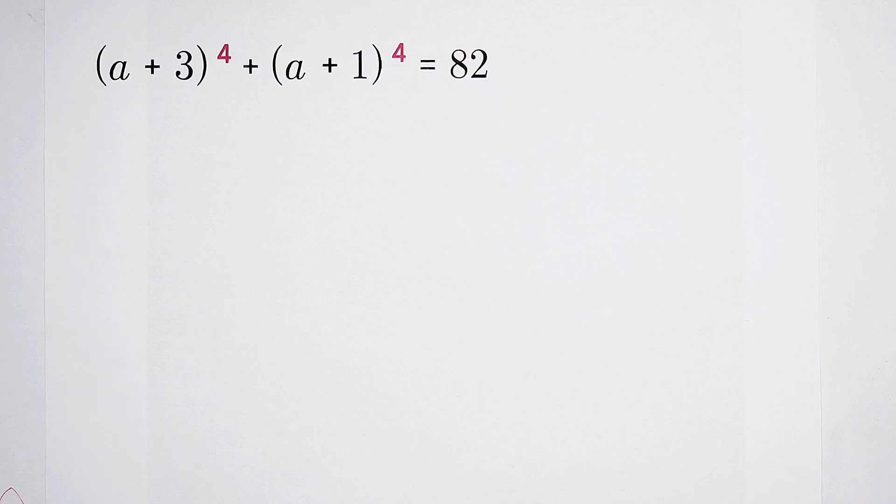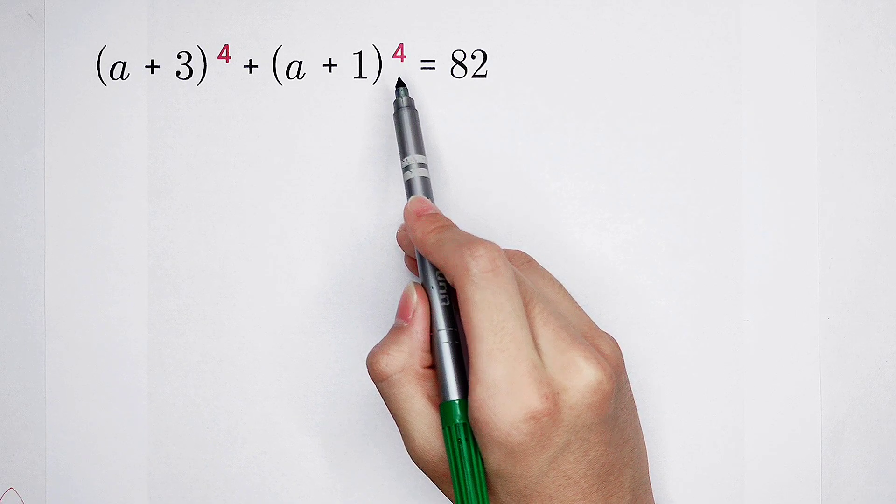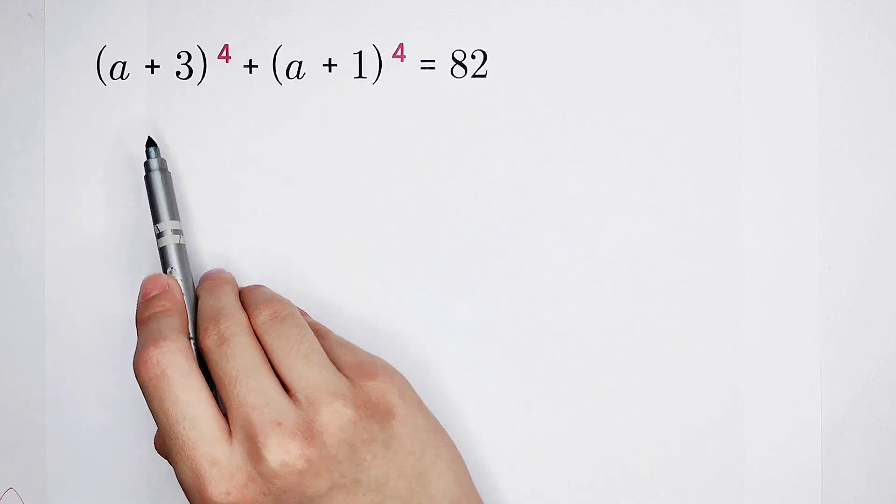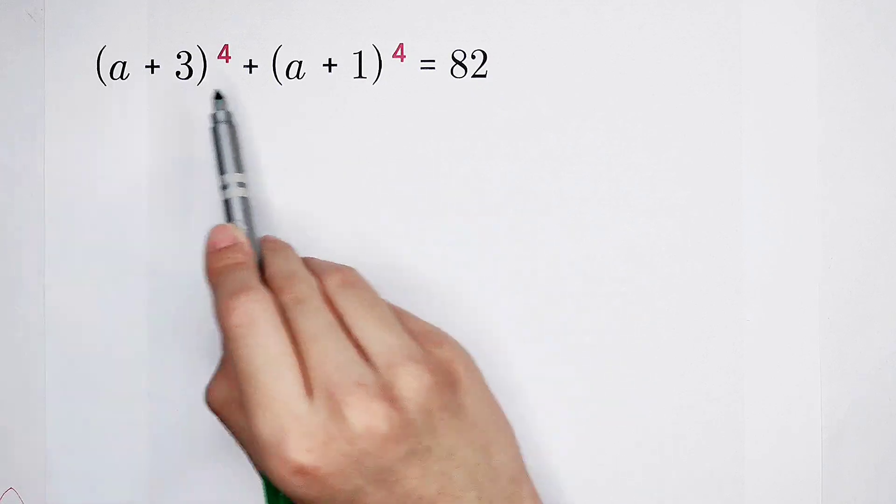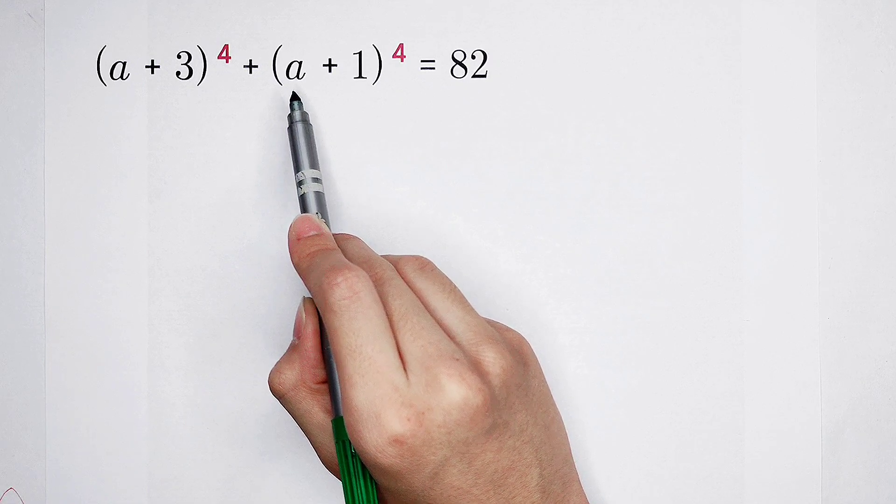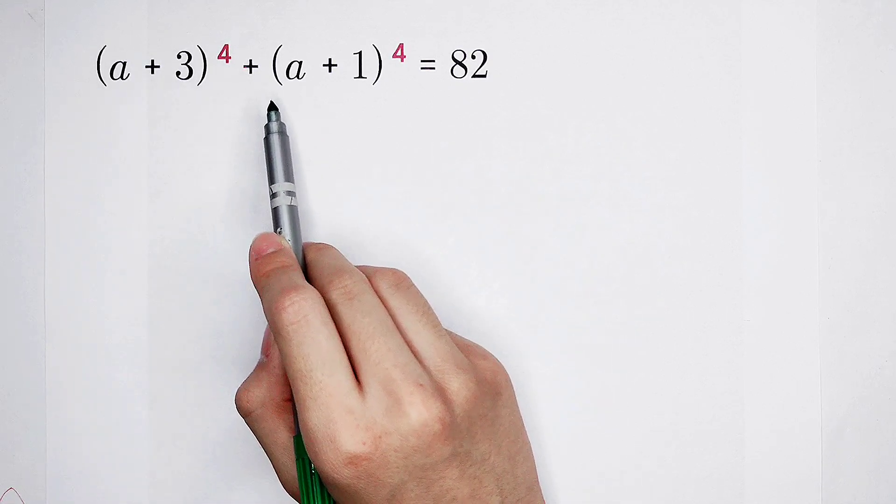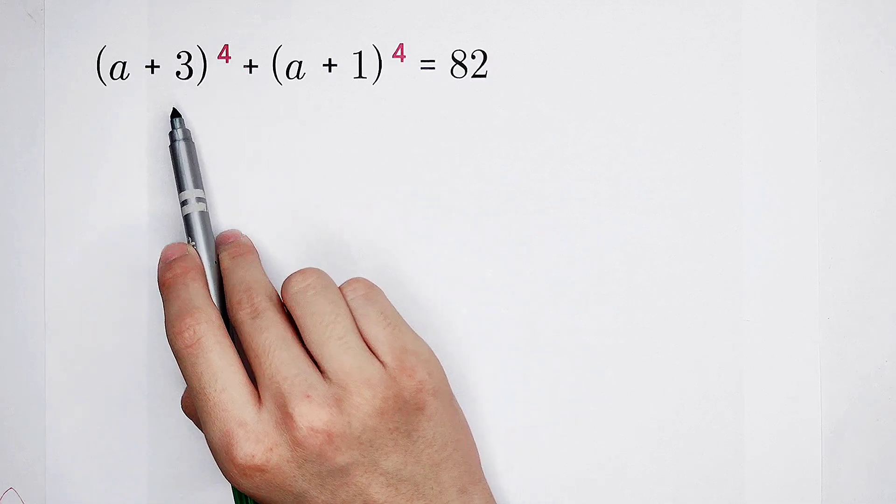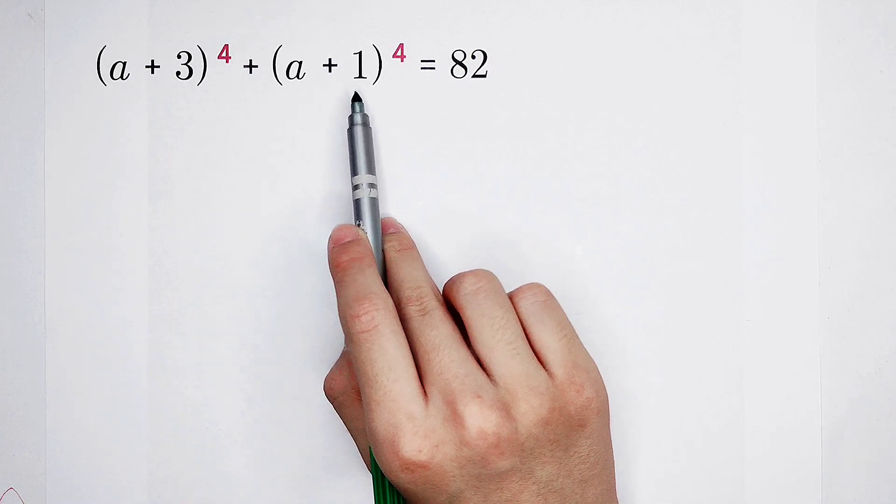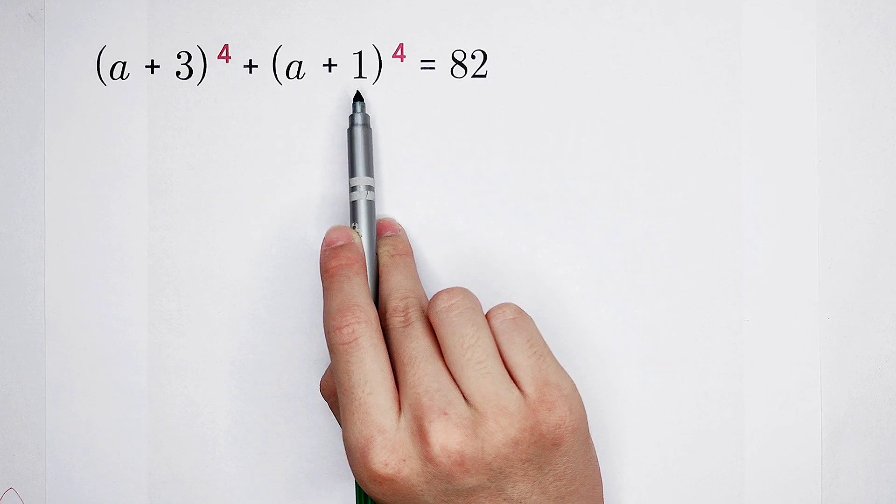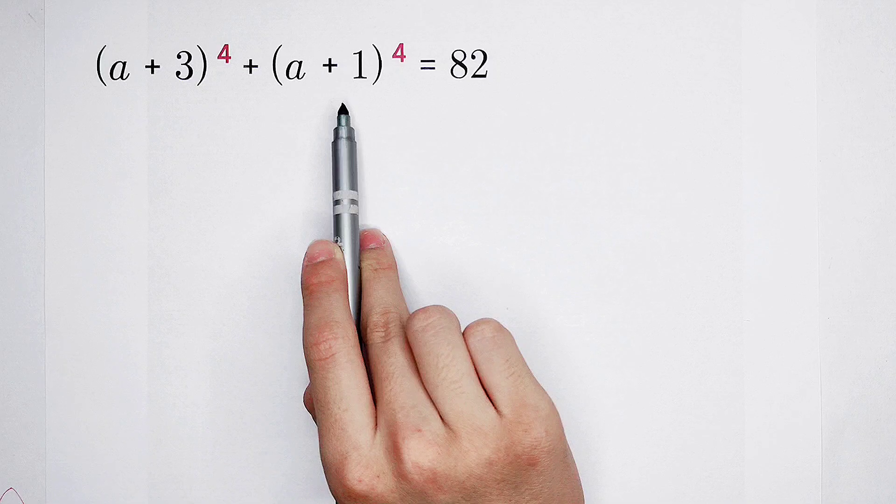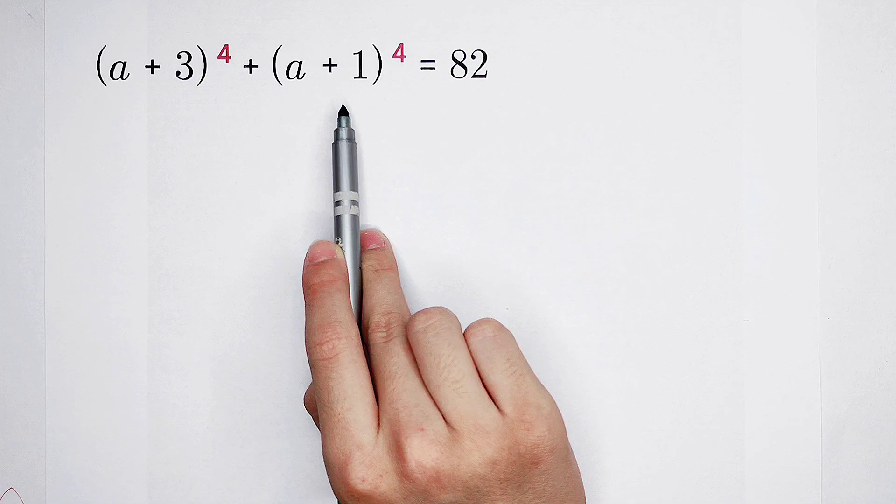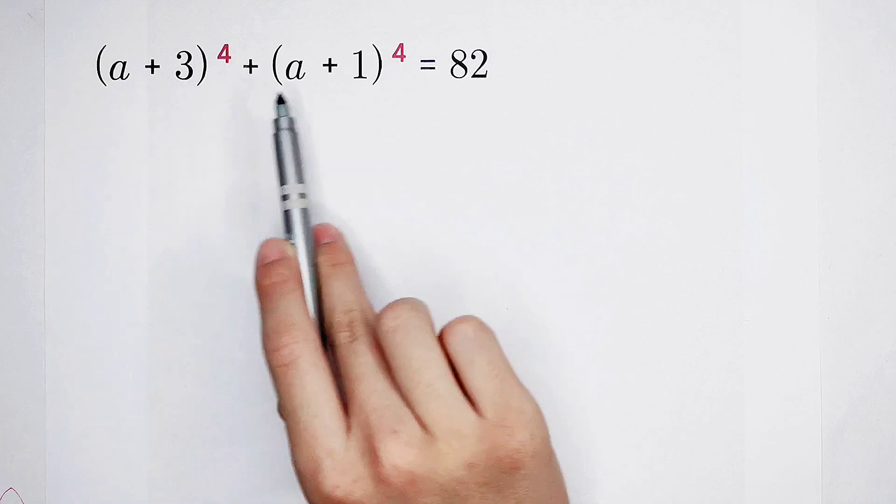For dealing with this kind of question, they have the same high exponents. The base is A plus 3, A plus 1. The coefficients in front of A are the same, 1. But here is 3, here is plus 1. So we have to find the mean of these two terms. Of course, it is A plus 2. And then we should substitute the mean term.